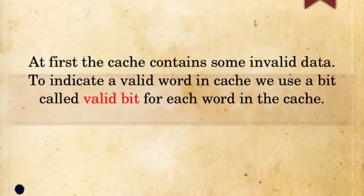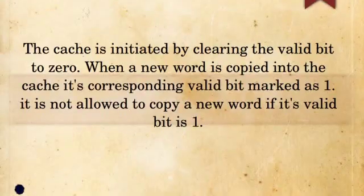To indicate a valid word in cache, we use a bit called the valid bit. The cache is initialized by clearing the valid bit to zero.